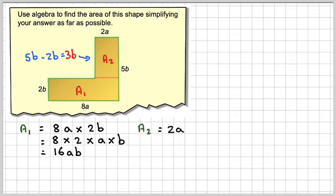And then we can go ahead and do A2 is going to be 2a, 2a times this length here, which is 3b. And then we're going to write it out as 2 times 3 times a times b. 2 threes are 6. And then a times b is going to be ab.